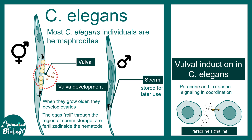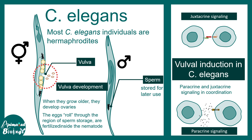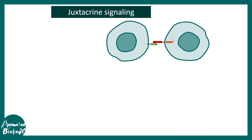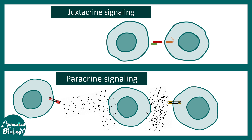Paracrine signaling means one cell secretes something and another cell in the near vicinity receives that signal using a receptor. Juxtacrine signaling means the cell makes contact with another cell through physical interactions — this happens with the cell just next to it. To clarify: in juxtacrine signaling, cell-cell contact is important; in paracrine signaling, cell-cell contact does not happen directly but via a secreted molecule. A cell far from the source cell still has the capability to receive the signal, but at a varying degree — cell one receives more signal, cell two receives less, and it depends on the distance.